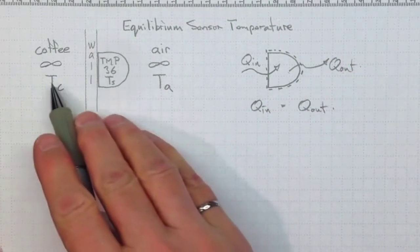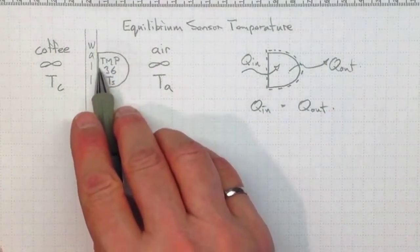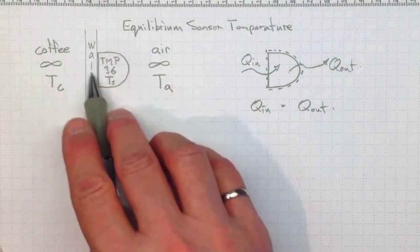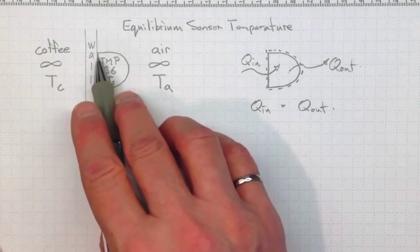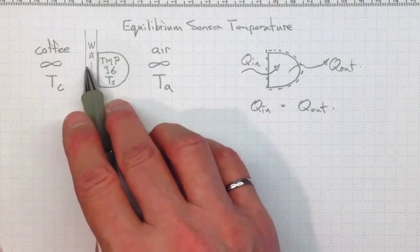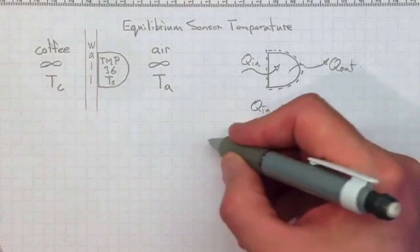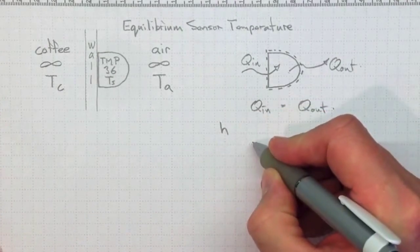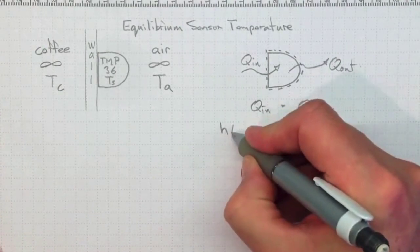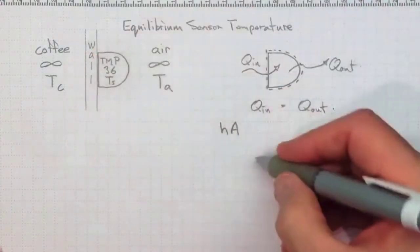And the heat coming in depends on how much of this temperature sensor is in contact with the wall and eventually with the coffee, and how effective the wall and the gap in between are at transmitting energy into the temperature sensor. So we're going to soak up all of the things that we don't know about heat transfer in that heat transfer coefficient h. We're going to multiply it by the area, this area here that's in contact with the wall.